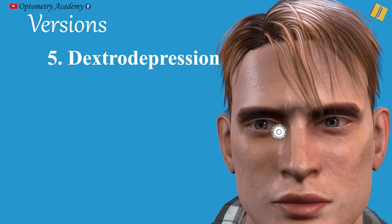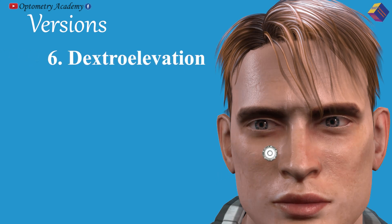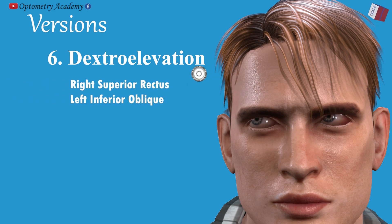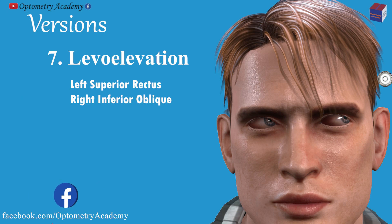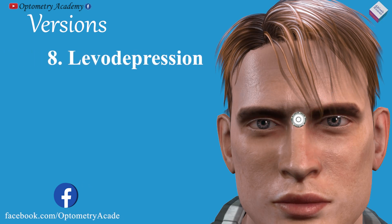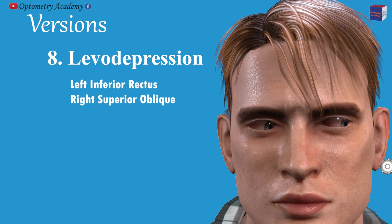Dextrodepression: when both eyes are turned down and to the right, caused by a simultaneous contraction of the right inferior rectus and left superior oblique muscle. Dextroelevation: when both eyes are turned up and to the right, caused by a simultaneous contraction of the right superior rectus and left inferior oblique muscle. Levoelevation: when both eyes are turned up and to the left, achieved by a simultaneous contraction of the left superior rectus and right inferior oblique. Levodepression: when both eyes are turned down and to the left, brought about by a simultaneous contraction of the left inferior rectus and right superior oblique.